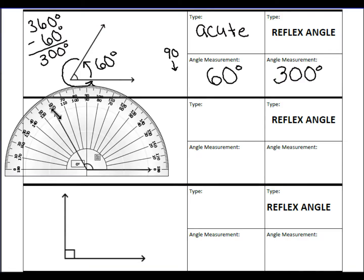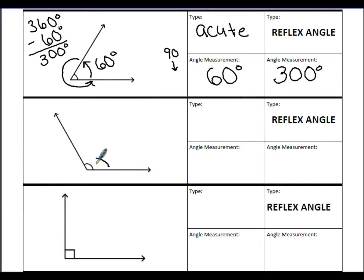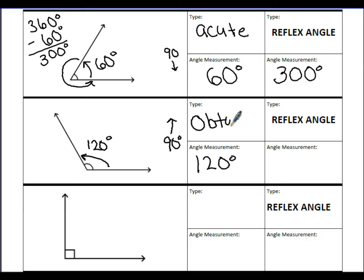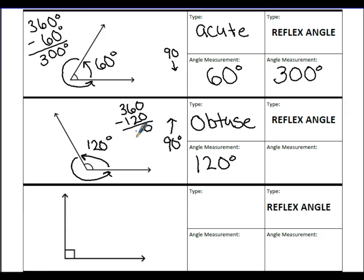Lining up the protractor and going from 0 to 120 degrees — this angle measures 120 degrees. Since 120 is greater than 90, this is an obtuse angle. The reflex angle goes the rest of the way around: 360 minus 120 equals 240 degrees for the reflex angle.